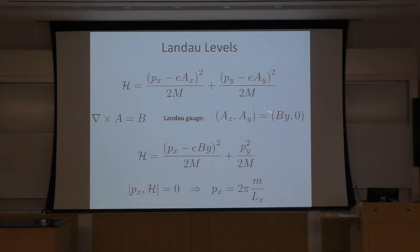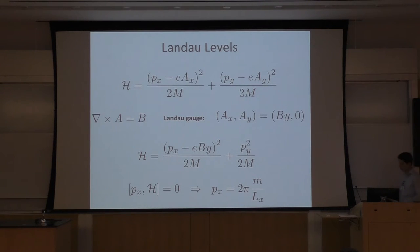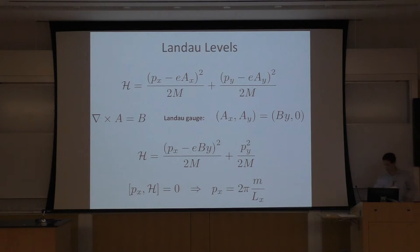Because Pₓ commutes with the Hamiltonian, Pₓ is a conserved quantum number. With periodic boundary conditions along the x direction, P equals 2π/Lₓ times some integer M. If we plug this fixed number into the Hamiltonian, we have a Hamiltonian as a function of P_y and y only, which is just a harmonic oscillator oscillating around the point y₀ = (2π M/Lₓ)/(eB). So the center of oscillation depends on the momentum, and the frequency of oscillation is related to the magnetic field.